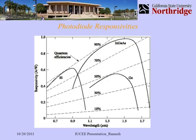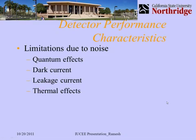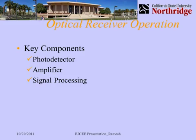Several effects limit detector performance: shot noise — due to the random arrival of photons — is a fundamental quantum limitation; dark current is caused by signal in the absence of light; leakage current results from surface and bulk defects; and thermal effects also provide limitations. Key components in the optical receiver are the photodetector, the amplifier, and subsequent signal processing.